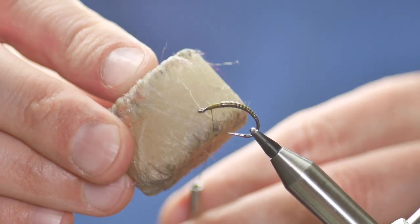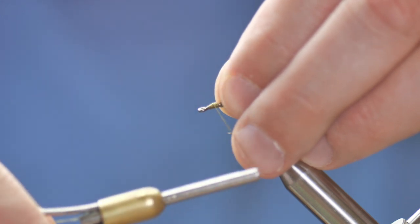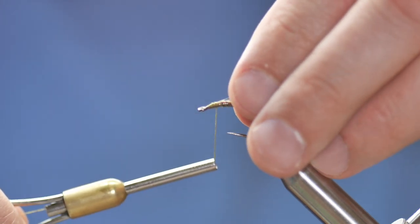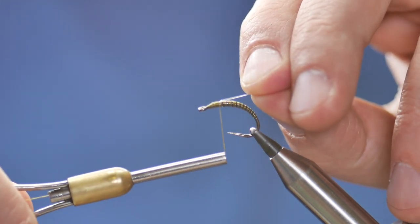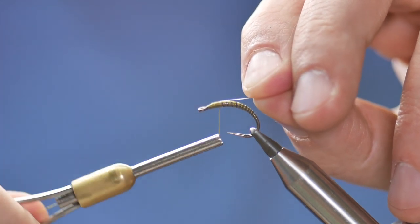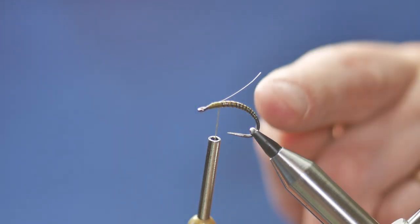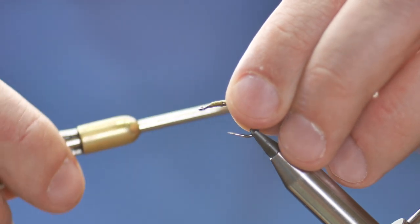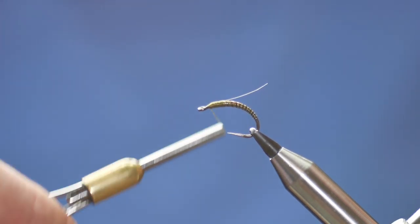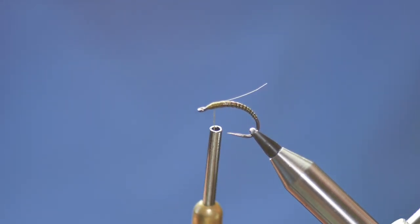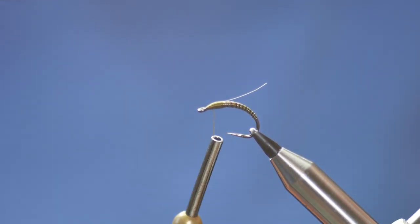I've already got a small piece in my fingers and I'm going to tie that in. Before I do, a little bit of wax to help grip it. Try and make sure when you're tying this in, it's coming right off the back. If you don't do that, what tends to happen is it ends up at an angle.